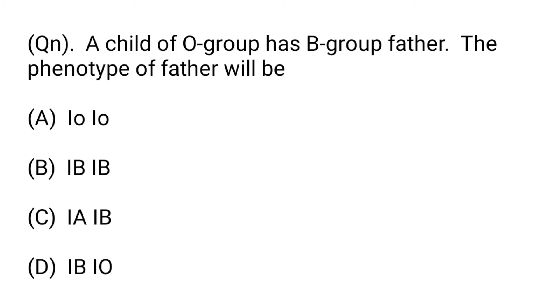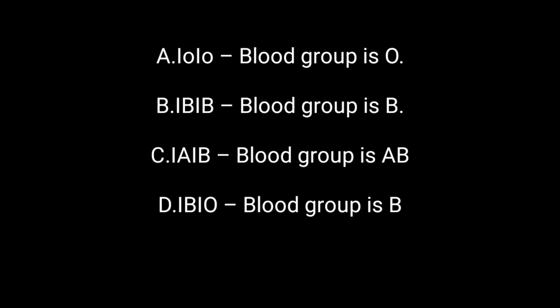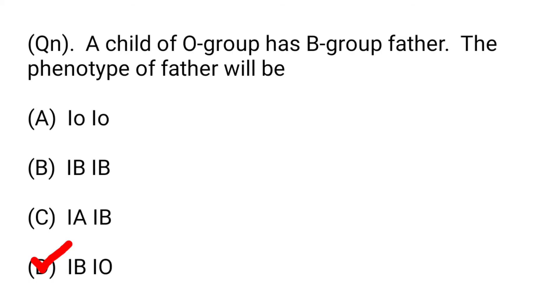Next question: A child of O blood group has a B group father. The phenotype of the father will be: Option A: IOIO. Option B: IB. Option C: IAIB. Option D: IBIO. IO represents blood group O, so the father must carry an IO allele alongside IB. Hence, option D, IBIO, is the right answer.